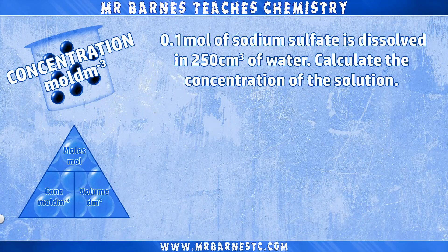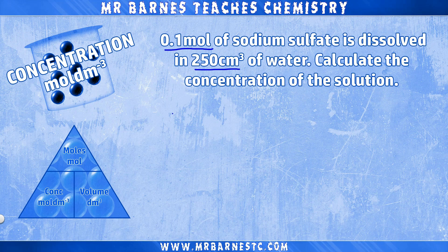Now a slightly more complicated question: 0.1 moles of sodium sulphate is dissolved in 250 centimetres cubed of water. Calculate the concentration in moles per decimetre cubed. We have the moles, which is 0.1, and the volume, which is 250 centimetres cubed — but we must convert this to decimetres cubed.